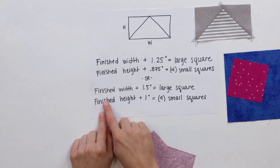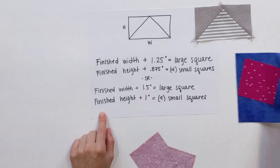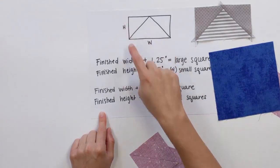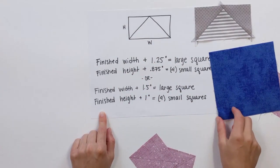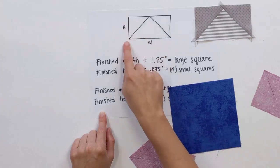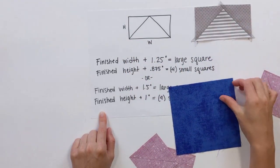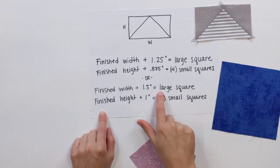So here we have finished width plus 1.5 inches, and that's going to be our large square. Finished height, plus 1 inch, and that's our four small squares. So today we're going to make flying geese that finish at 2 inches high by 4 inches wide, like this guy here.